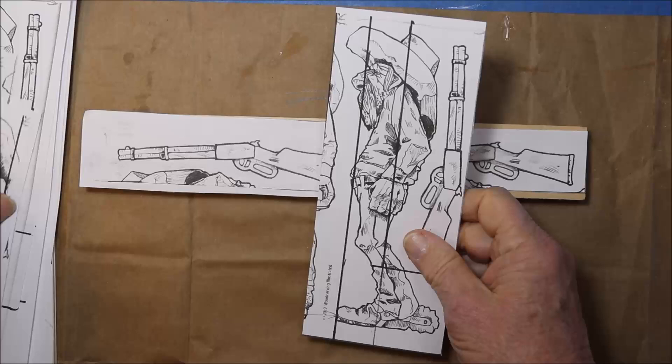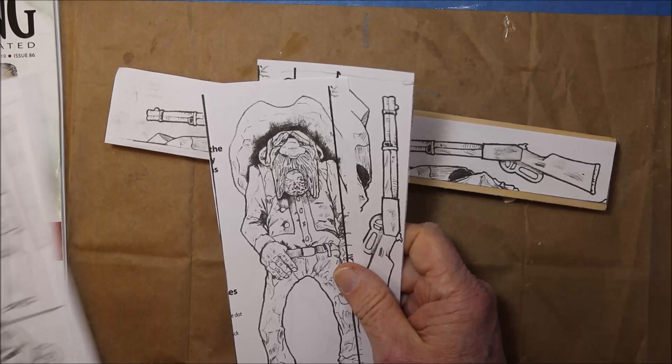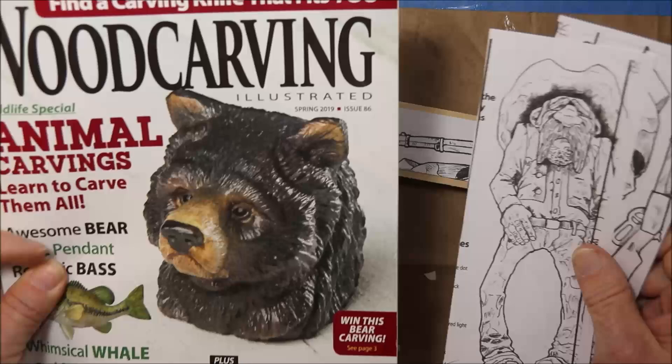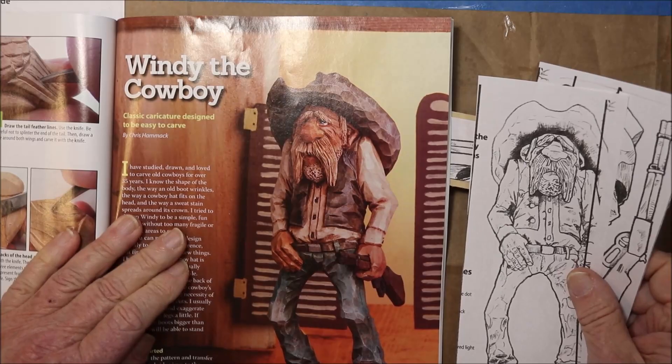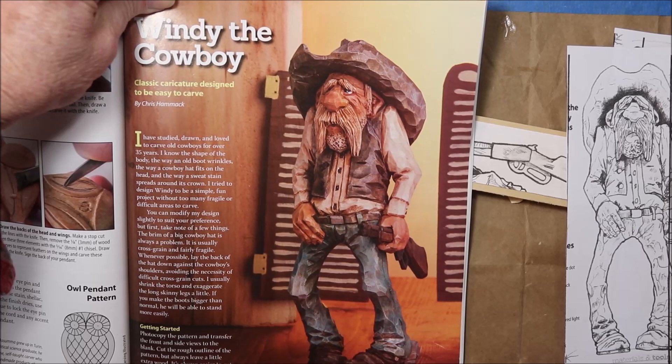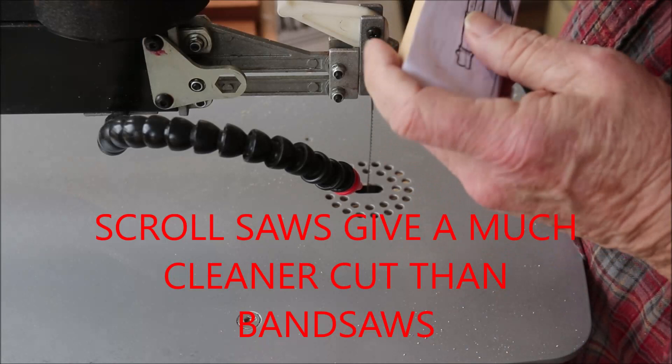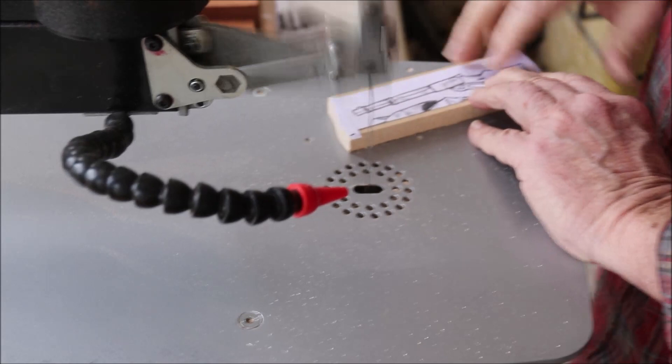That's what we're doing. It's a Chris Hammock project from Woodcarving Illustrated, spring issue number 86. Wendy the Cowboy, sorry about that reflection there. Let's go cut it out on the scroll saw. Let's cut out a couple of rifles here, well at least one anyway. It's going to get a little noisy, so bear with me.